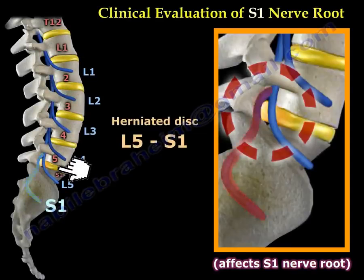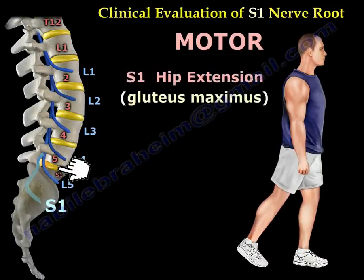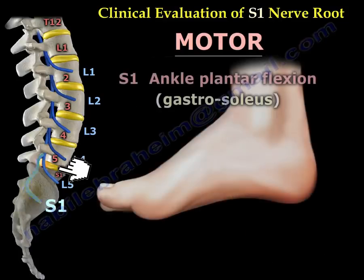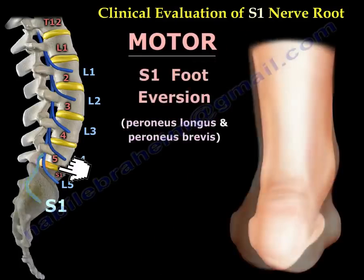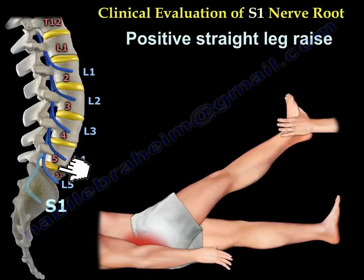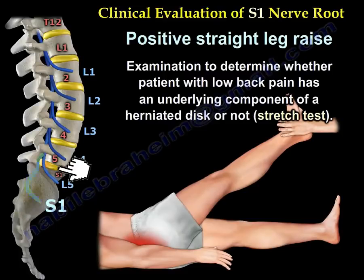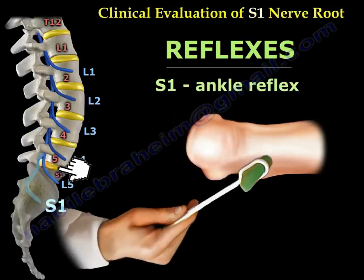Herniated disc between L5 and S1 will affect the S1 nerve root. The sensory of S1 will be the lateral and plantar aspect of the foot. For motor, it is hip extension (gluteus maximus), ankle plantar flexion — the gastrocnemius-soleus complex is what we use — and foot eversion via the peroneus longus and brevis. A positive straight leg raise is also used to determine if low back pain has an underlying herniated disc component. The reflex for S1 is the ankle reflex.